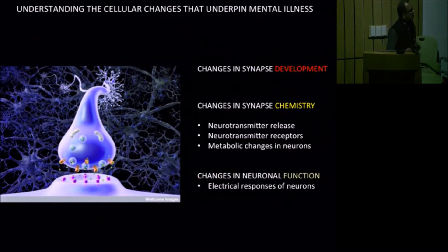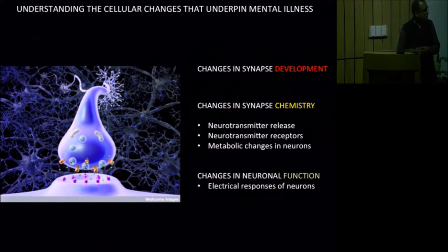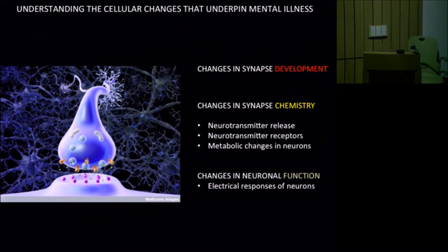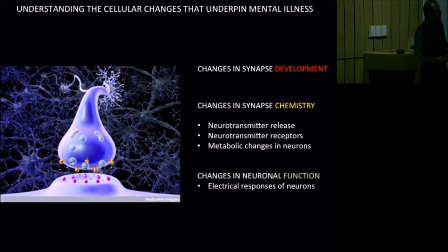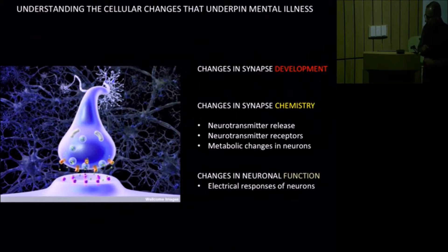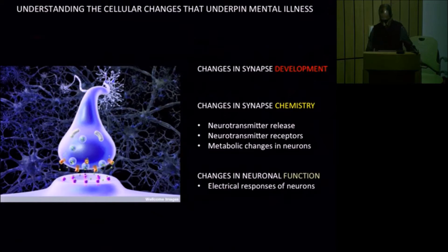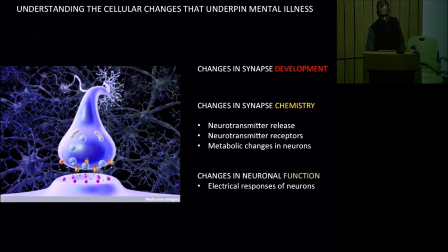In addition to studying the development and chemistry of the synapse, we would also like to know how differently they function between normal people and people with mental illness. My colleague Shona, who is not here today, is an expert in analyzing neuronal function using approaches such as electrophysiology and high-resolution calcium imaging. We will be using these approaches to understand how neurons function in the dish from patients with particular sorts of illnesses. This is about the cell biology of how neurons might be different in patients with mental illness.